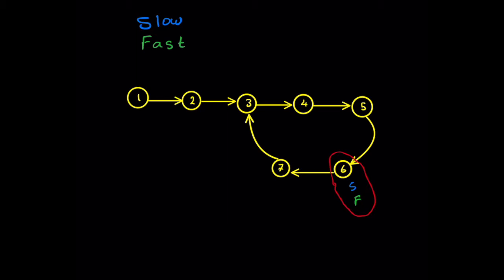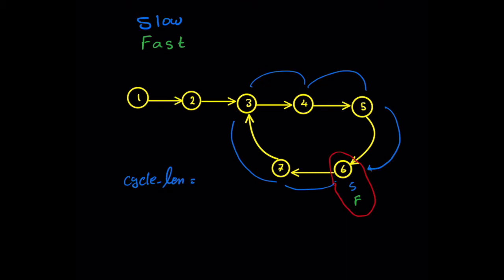Now how do we find the beginning of this cycle? What we can do is start calculating the length of the cycle by moving one of these pointers one step at a time and counting the cycle length. Let's count it — let's move the slow pointer until we reach back to the beginning: one, two, three, four, and five. So the length of the cycle is equal to five.